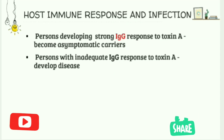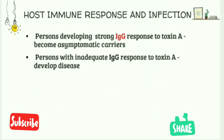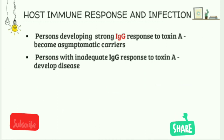Other risk factors include old age, underlying illness, intestinal surgery, and use of electronic rectal thermometers. The immune response may determine the outcome of infection: persons developing a strong IgG response to the toxin become asymptomatic carriers, while persons with an inadequate IgG response to Toxin A develop disease.